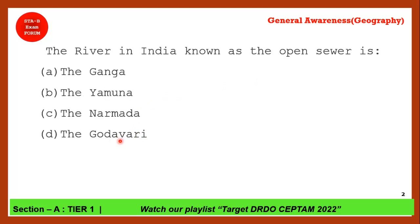Next question: The river in India which is also known as 'open square' — both option A and option B are correct for this question, making it a doubtful question.